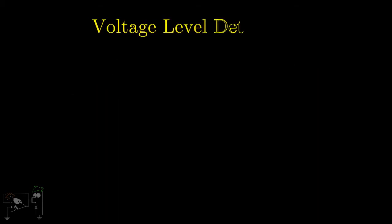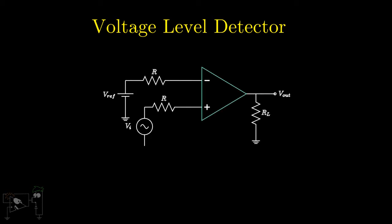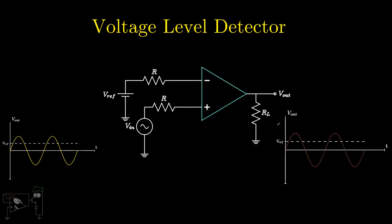The first and the most simplest of the applications is a voltage-level detector. It tells us when the input signal goes beyond a reference voltage. This can be built simply by connecting the input to the non-inverting terminal and the reference voltage Vref to the inverting terminal. Once Vin exceeds Vref, Vout becomes 1, that is, plus Vsat.